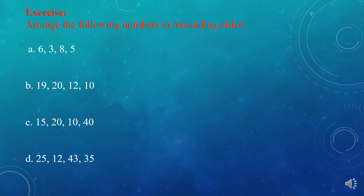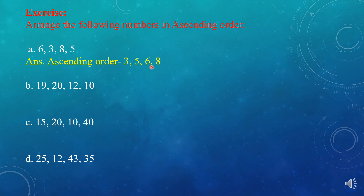Now there is one exercise. Arrange the following numbers in ascending order. Ascending order means we write the smallest number first, in increasing order. The first question is: 6, 3, 8, 5. The ascending order is 3, 5, 6, 8. We write the smallest number — 3 — first, then 5, then 6, and at last 8.